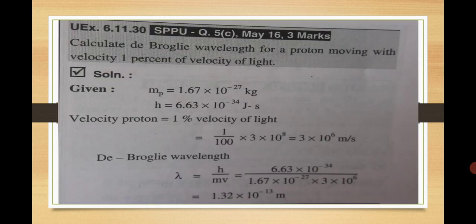Calculate the de Broglie wavelength for a proton moving with velocity 1 percent of the velocity of light. Velocity of light is 3 × 10⁸ m/s, so 1 percent gives velocity = 3 × 10⁶ m/s. Using lambda = h upon mv and putting in mass of proton and this velocity, we get 1.32 × 10⁻¹³ meters. As the velocity is increased and the proton moves comparable to the velocity of light, the wavelength is again very, very small. Thank you very much.